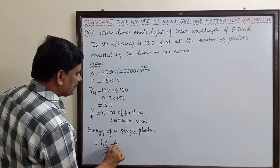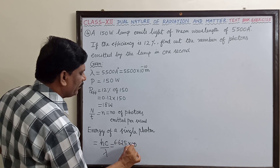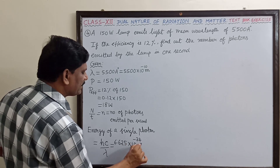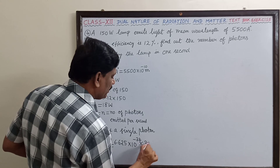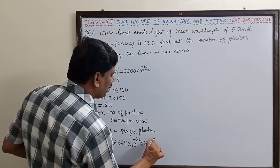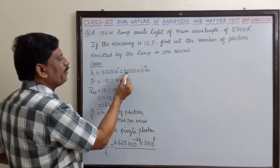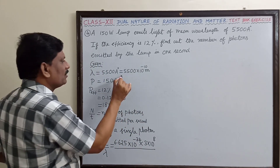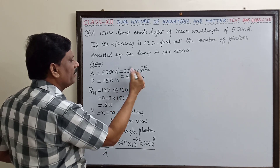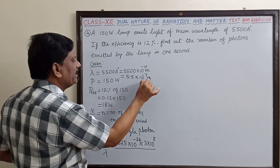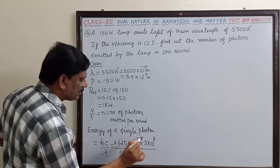Substituting values: h is Planck's constant, 6.625 into 10 to the power minus 34 joule second; c is the velocity of light, 3 into 10 to the power 8 m/s; and lambda is 5.5 into 10 to the power minus 7 meter.